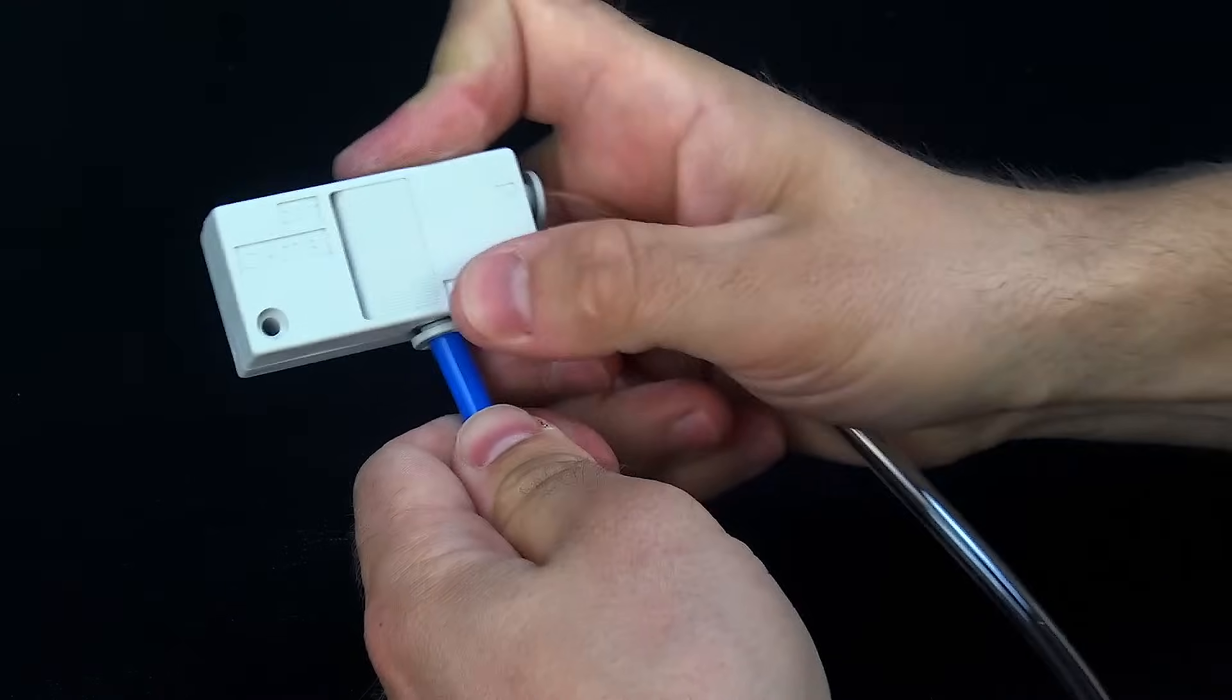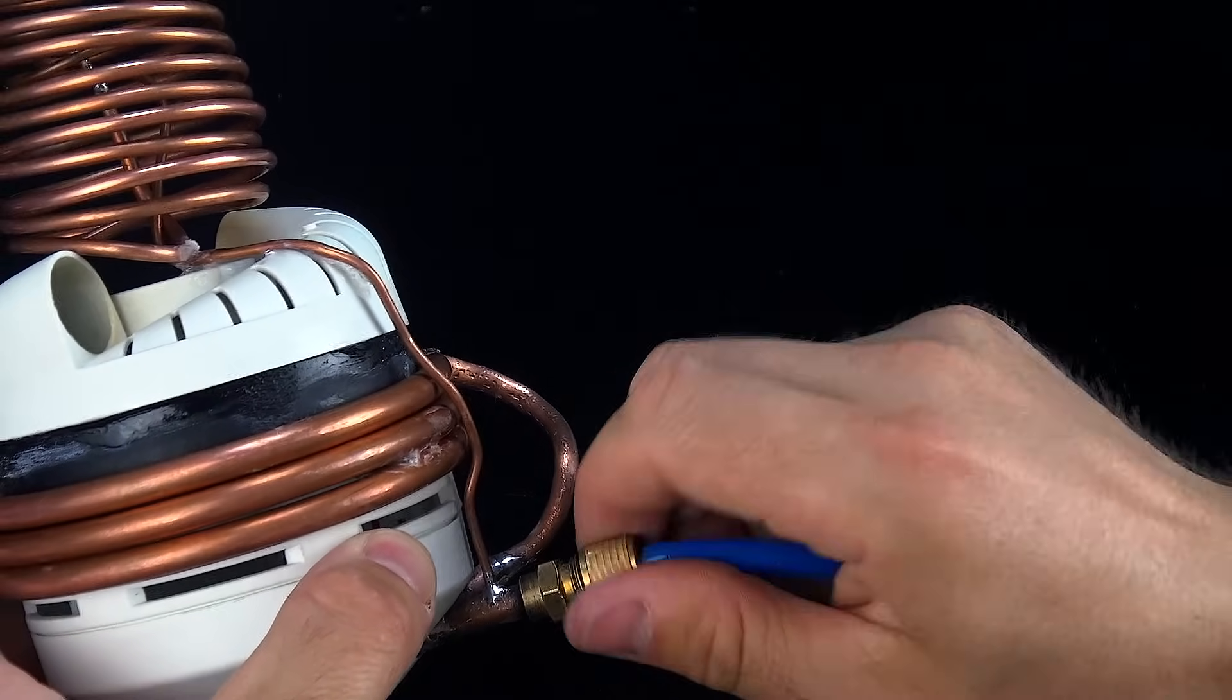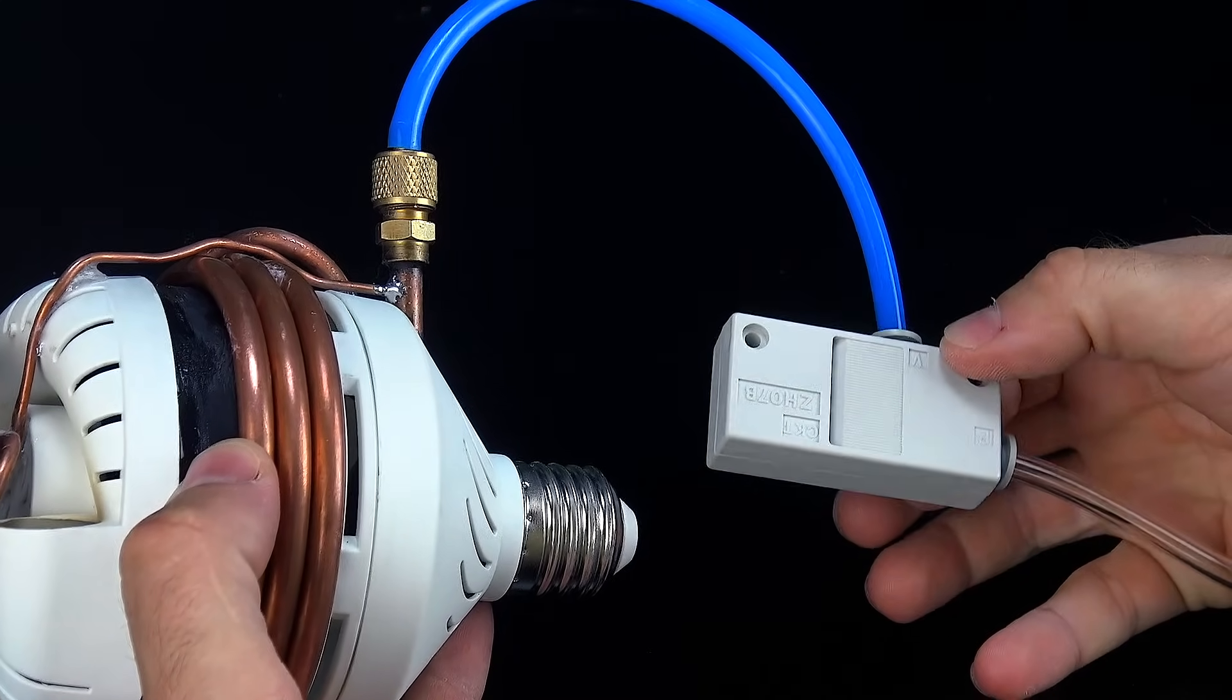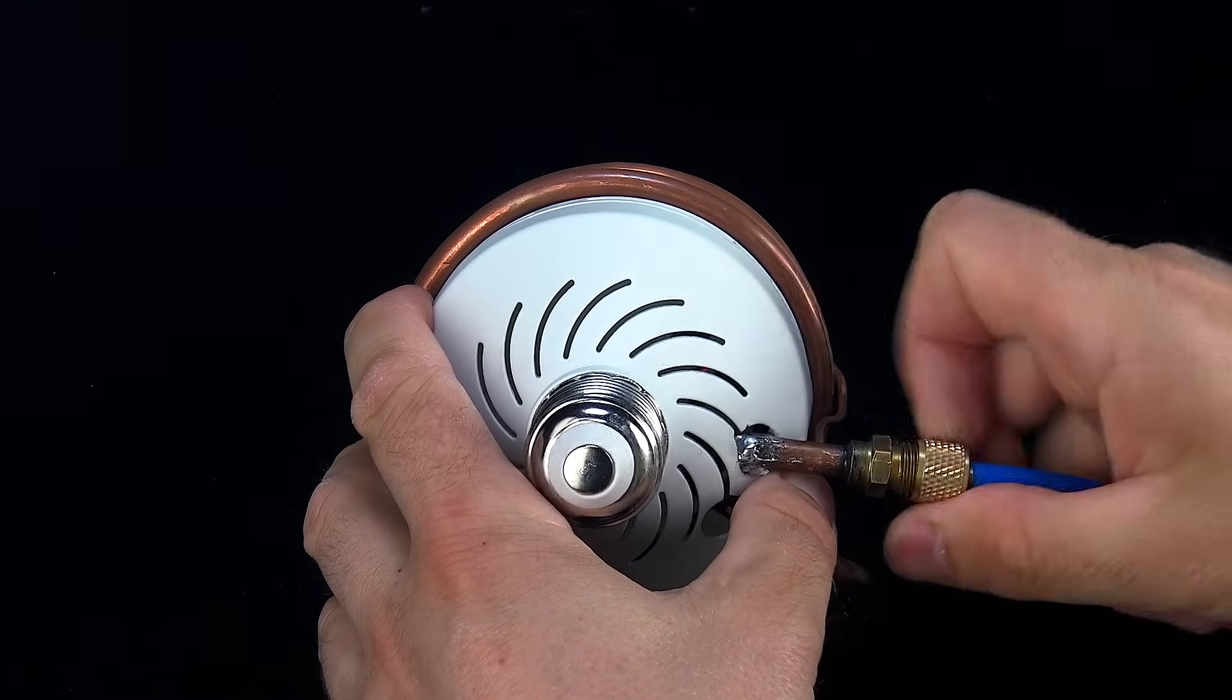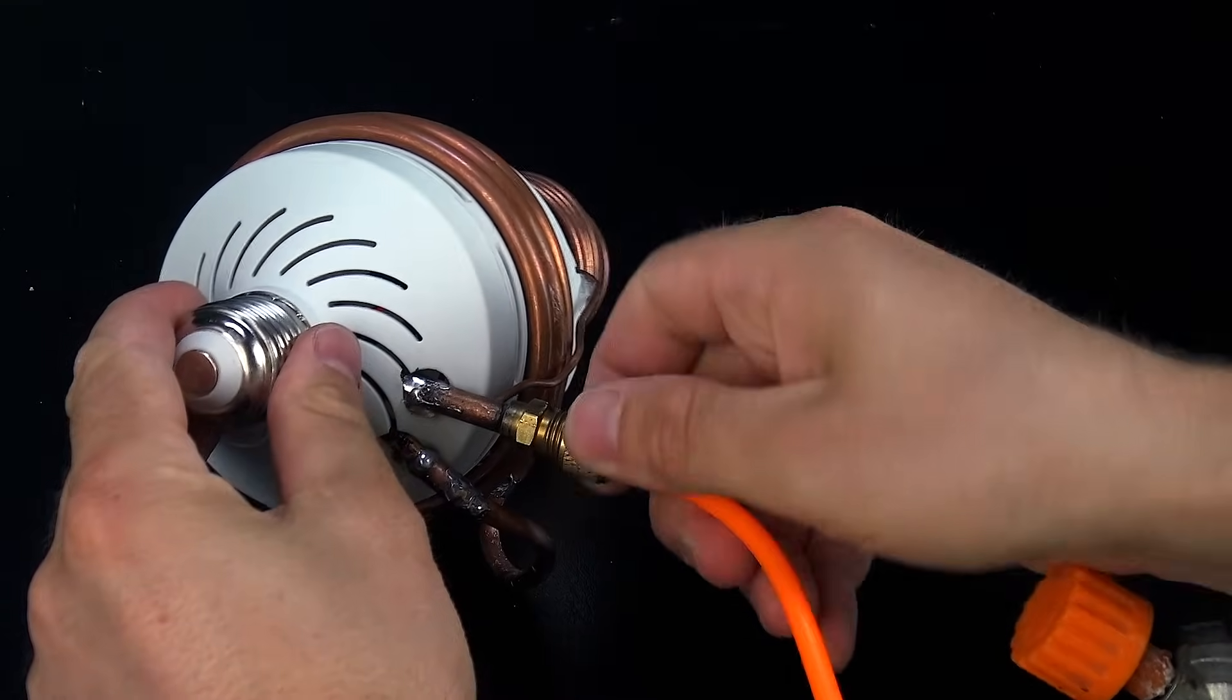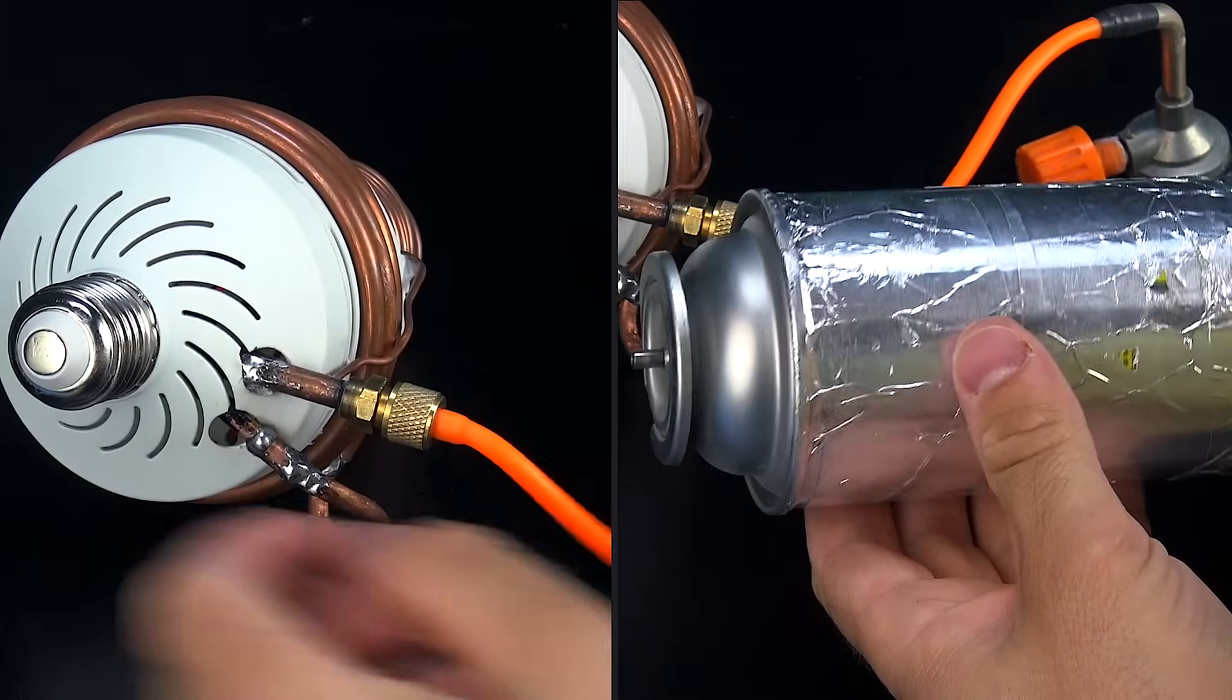We're almost at the finish line. With the vacuum generator and compressor set up, it's time for one final but very important step: vacuuming the system. This process removes all the air and any remaining moisture inside the system, which could interfere with the refrigerant's performance. Plus, creating a vacuum allows us to add more refrigerant into the system, improving both efficiency and reliability. So yeah, vacuuming is absolutely essential. Think of it like taking a deep breath before getting to work: clean, dry, and ready to run.